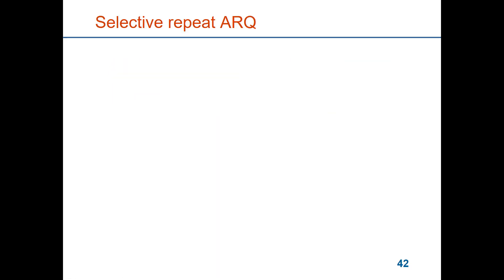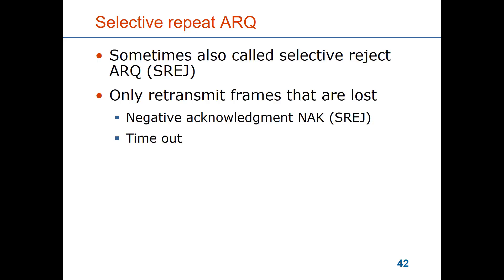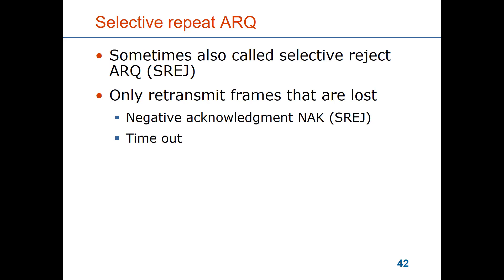Now we look at selective repeat ARQ, also sometimes called selective reject. There you only retransmit frames that are lost, which is more efficient. Imagine a very large send window for a satellite link where N can be thousands of frames — if the first frame is missing, a go-back-N retransmission would mean all those thousands of frames have to be retransmitted even if only one was incorrectly received. For such systems it's much more efficient to only retransmit lost frames. For that you need a negative acknowledgement indicating a certain frame was not received, and you still need a timeout as fallback since negative acknowledgements can also be lost.